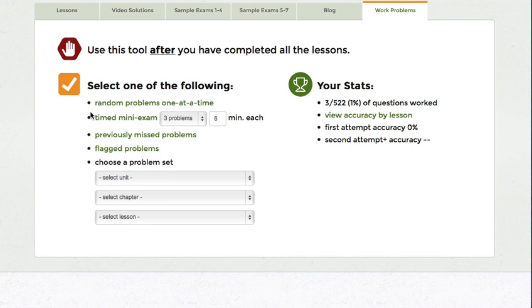You can also generate timed mini-exams out of random problems selected from the entire course. The default time is chosen based on the average time you will have on your real exam, but you can adjust it however you like. It'd be natural to start with more time when you get started and work your way down to a smaller time per problem as your exam date gets closer.